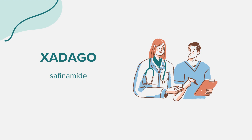While on Xadago, and for 14 days after stopping, it's recommended to avoid foods high in tyramine, such as pickled foods and certain meats. Consuming tyramine while on Xadago can dangerously elevate blood pressure. Also, some patients have reported falling asleep during daily activities, so it's advised to avoid driving or operating machinery until you're sure of how Xadago affects you.